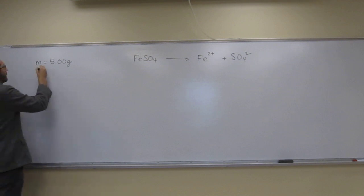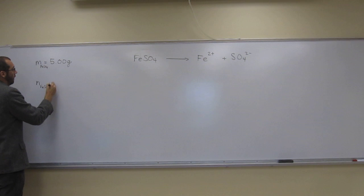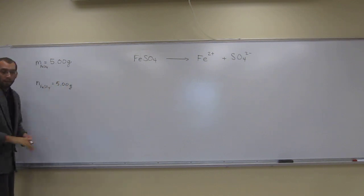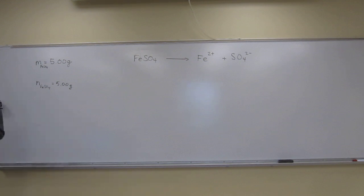So we have the mass of iron 2 sulfate here, so we're going to have to figure out the number of moles of iron 2 sulfate. So let's figure that out. The number of moles of iron 2 sulfate is going to be 5.00 grams, and we're going to have to know the molar mass of iron 2 sulfate, so let's calculate that.